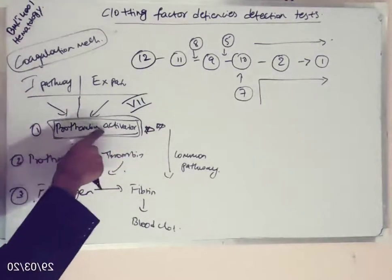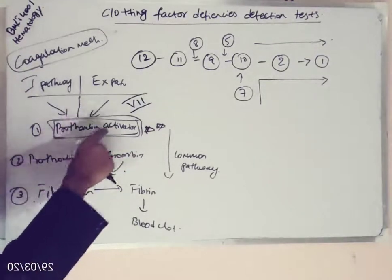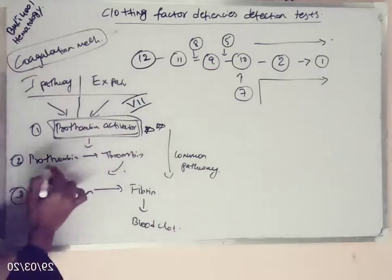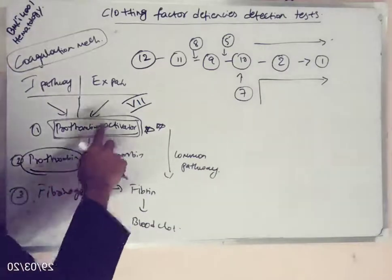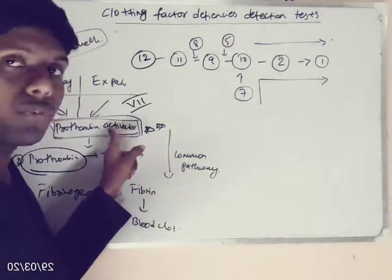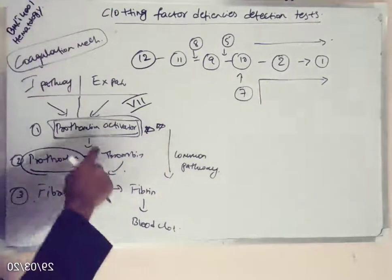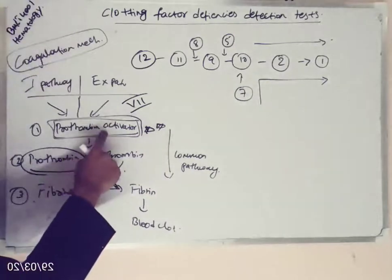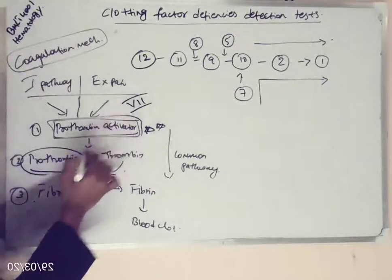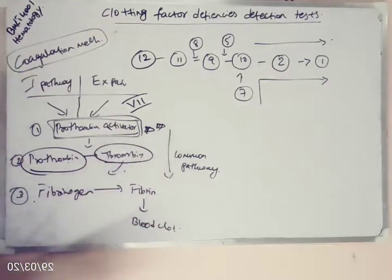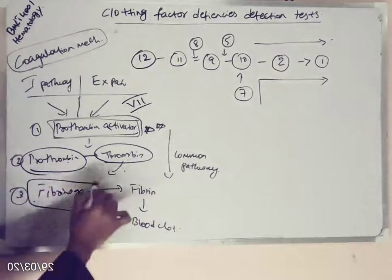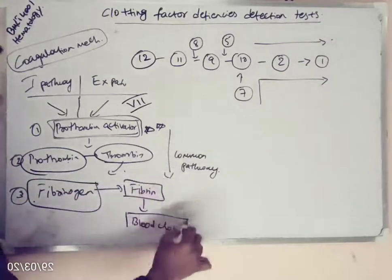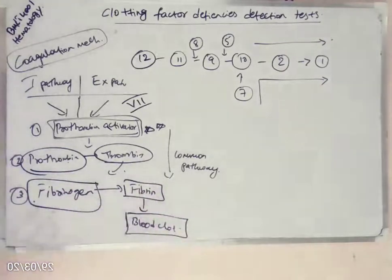Once prothrombin activator is formed, it converts prothrombin to thrombin. This thrombin then converts fibrinogen to fibrin, and this fibrin results in a blood clot.